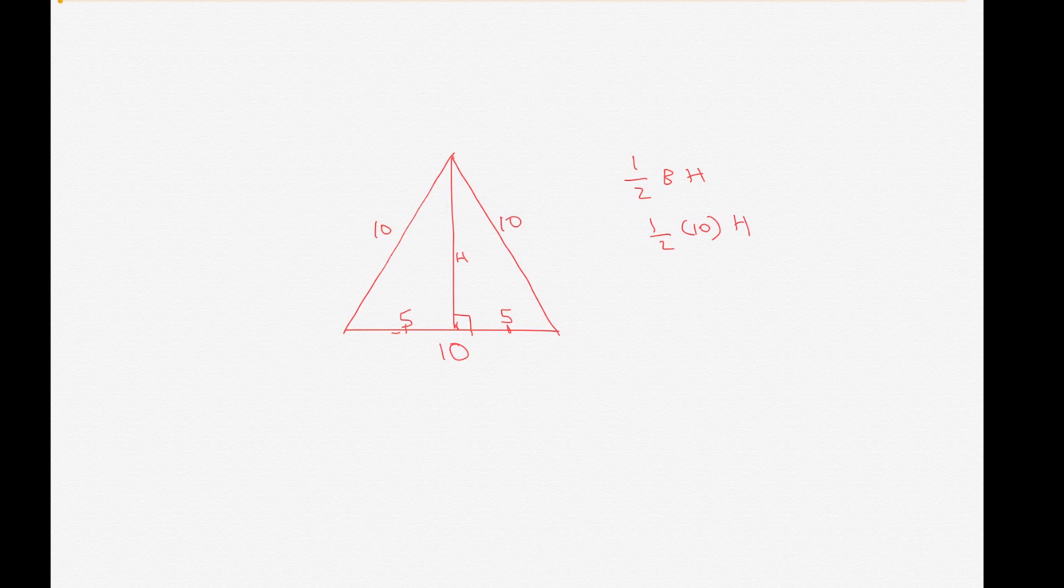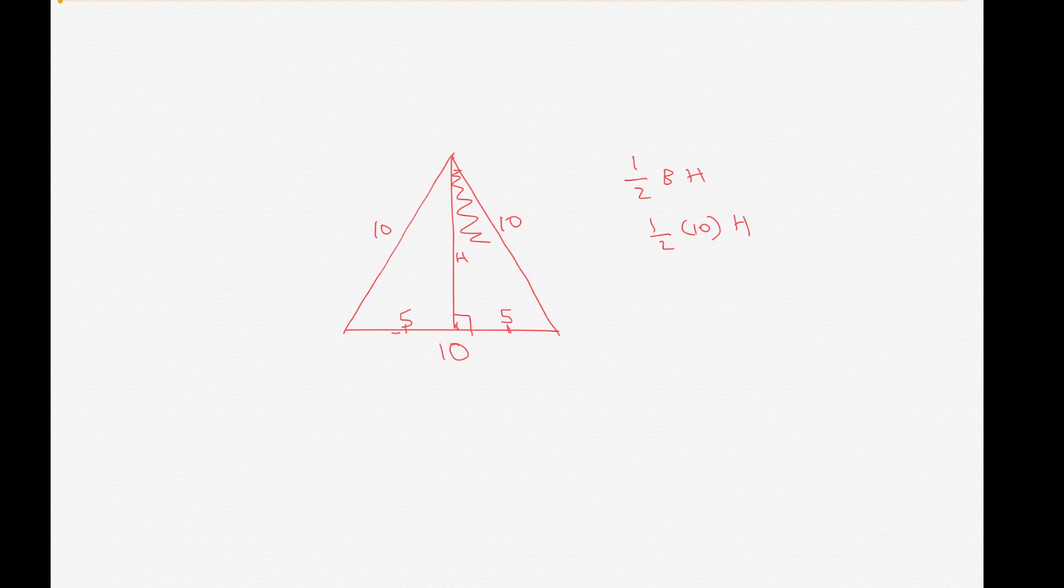Now what we have here are two right triangles. Let's focus just on this right triangle. We have the two sides is h and five, and then the hypotenuse is ten.